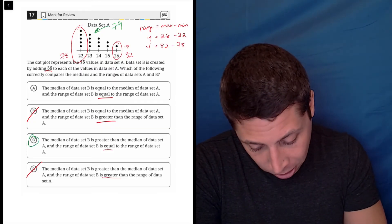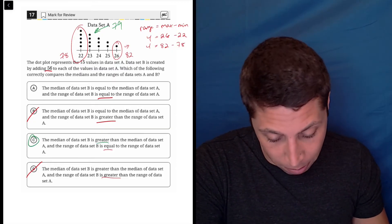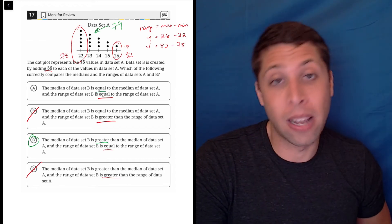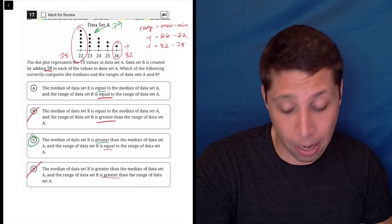So that means that choice C is going to be our answer because that says that the median of B is greater than the median of A and that is not the same, that are not going to be the same, so they're not going to be equal.